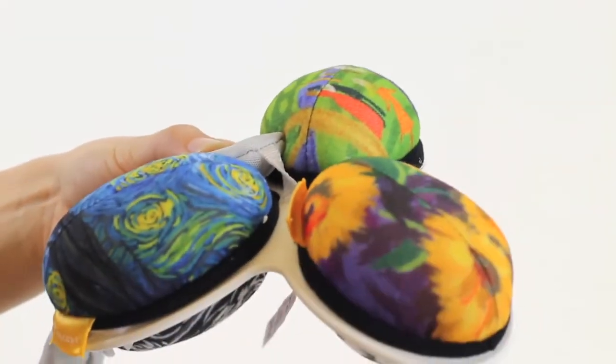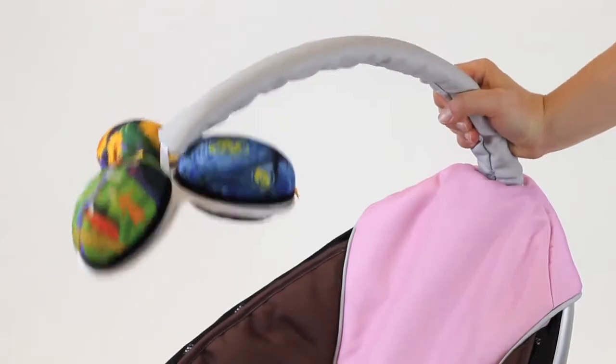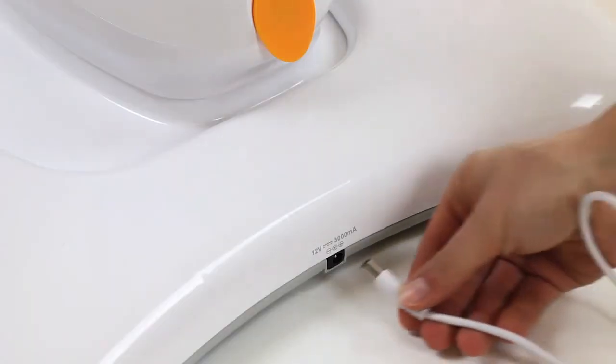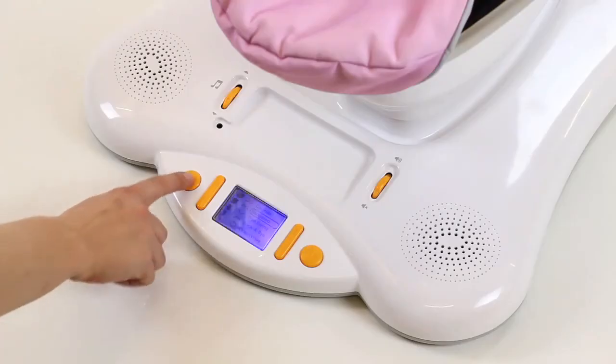Place the toy balls in the toy ball ring and install the toy bar. Plug in the power supply and you're ready to start using your Mamaroo.